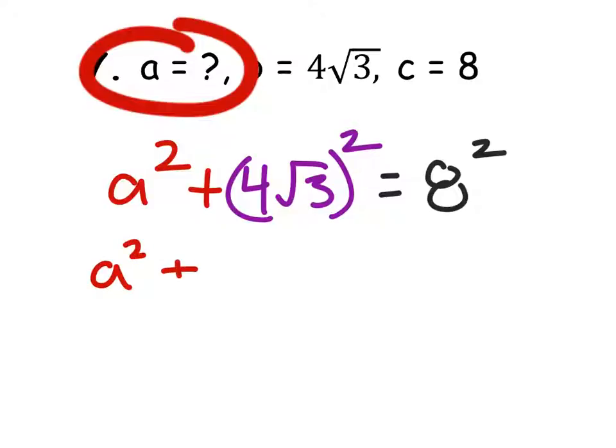So A squared plus, we have to square both of these because of our exponent rules. Four squared is sixteen times the square root of three squared is three, and this will equal eight squared, which is sixty-four.